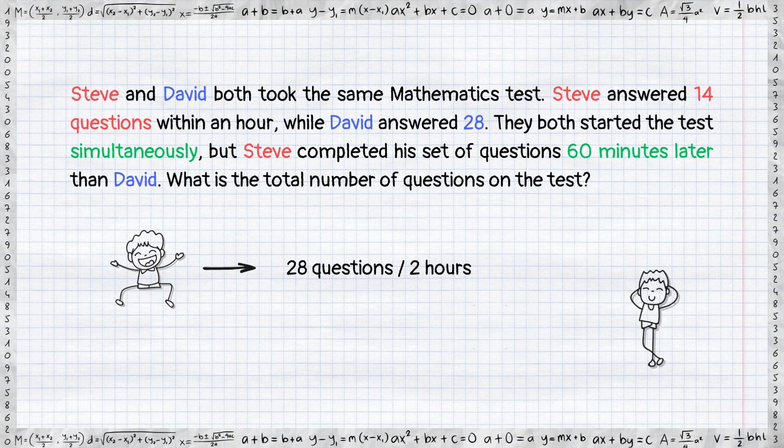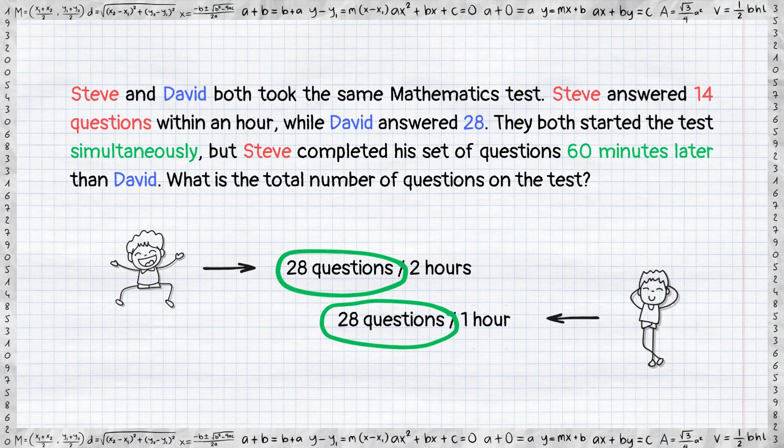Considering that David can also answer the same 28 questions in one hour, we can conclude that the test comprises exactly 28 tasks. And that is how David overtook Steve by these 60 minutes.